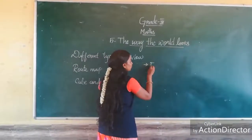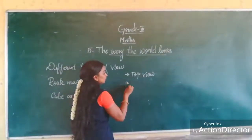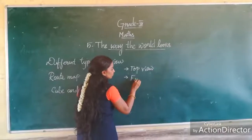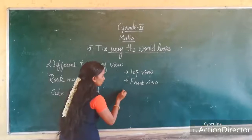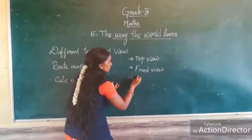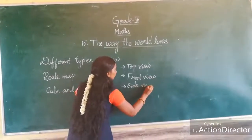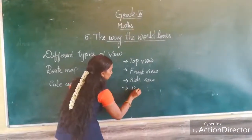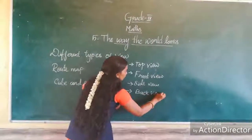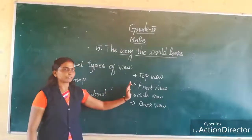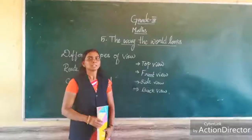Types of view: first, top view; and then, front view; and then, side view; and at last, back view. So the four types of view are: top view, front view, side view, and back view.